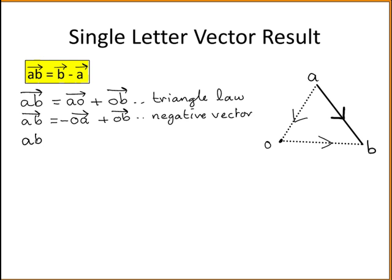So AB can be written as OB minus the vector OA. So the vector AB can be written as, now any vector that starts at the origin can be written as its single letter vector, so that's just going to be the vector B minus, and here it's going to be the vector A, so you've proven that result.